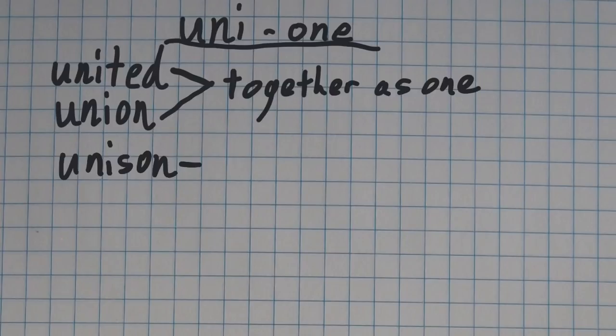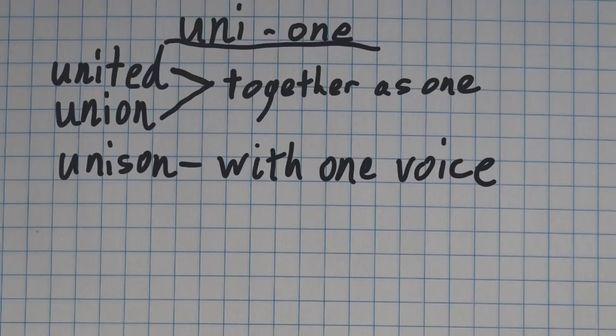The word unison means with one voice. For example, for choir, you're all singing in unison with one voice. Usually, you don't have 50 people singing 50 different things. You sing in unison, or sometimes you may speak in unison together if you're doing a presentation.